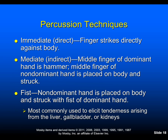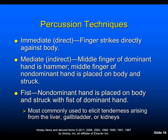Percussion techniques are the same regardless of the structure being percussed. Immediate or direct percussion is when the finger strikes directly against the body part. Mediate or indirect percussion is where the middle finger of the dominant hand is the hammer and strikes the middle finger of the non-dominant hand placed on the body. Fist percussion involves placing the non-dominant hand on the body and striking it with the fist of the dominant hand — this is most commonly used to elicit tenderness arising from certain body organs.